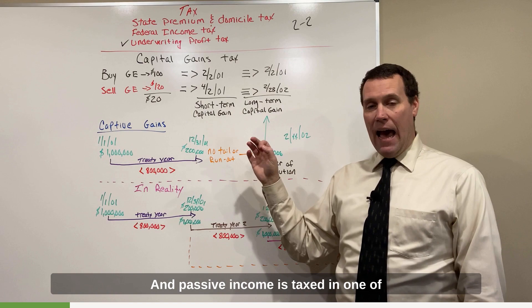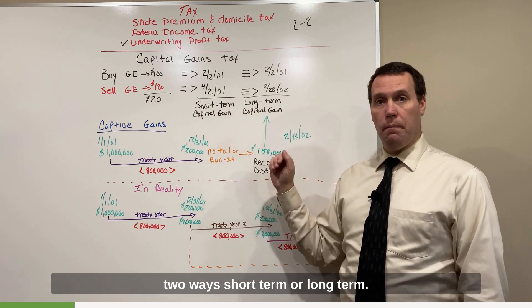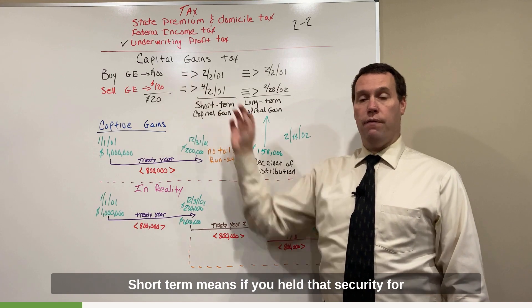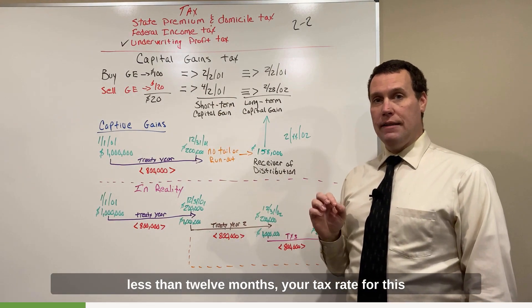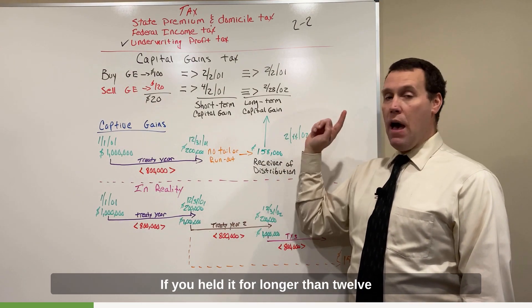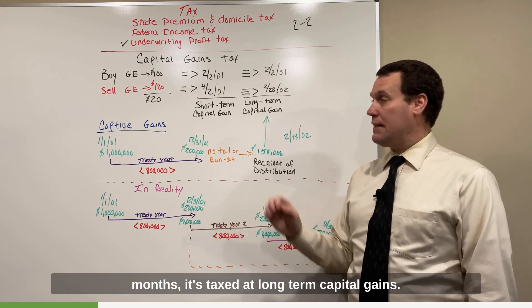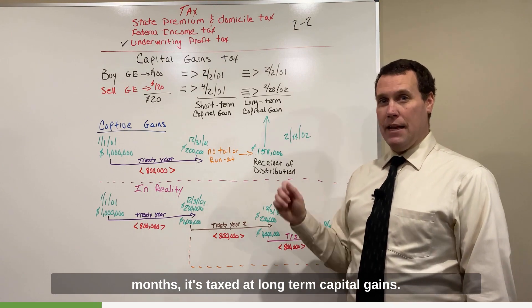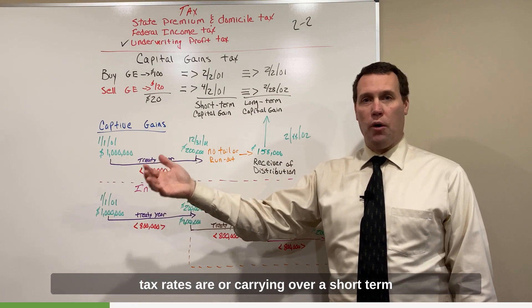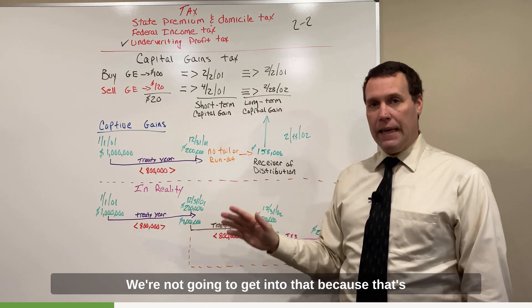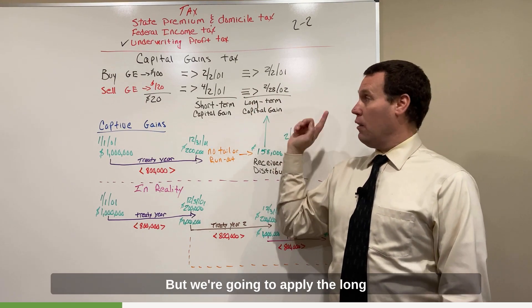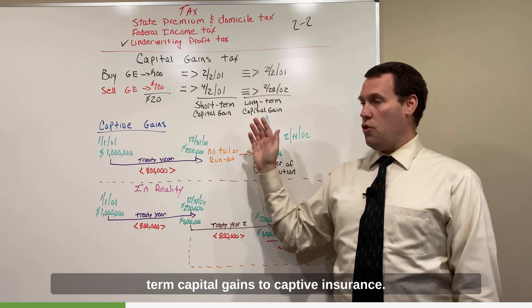And passive income is taxed in one of two ways: short-term or long-term. Short-term means if you held that security for less than 12 months, your tax rate for this $20 profit is taxed at short-term capital gains. If you held it for longer than 12 months, it's taxed at long-term capital gains. Now I'm not going to get into what those tax rates are or carrying over a short-term loss and offsetting it with a short-term gain. We're not going to get into that because that's where the complexities of this discussion really sit. But we're going to apply the long-term capital gains to captive insurance.